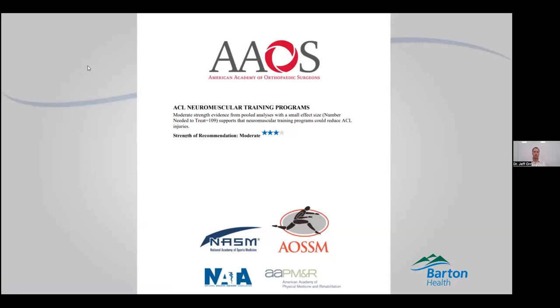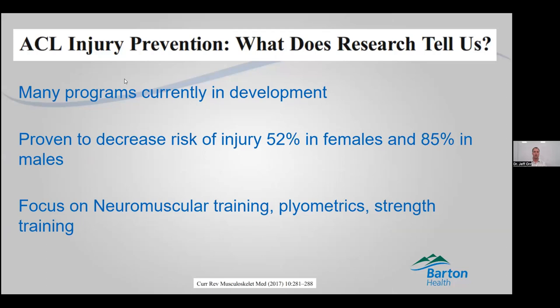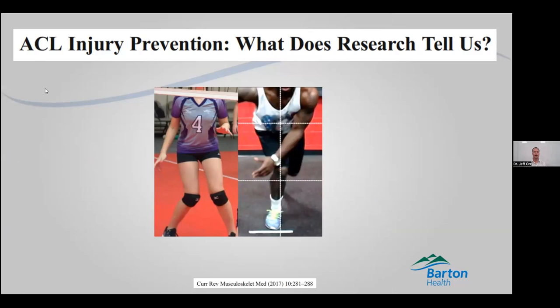Neuromuscular training program: keeping the legs strong, keeping your core strong, and staying in balance and having good control is important. Currently there are many programs in development — this is a very big thing that a lot of high schools, youth soccer, football, and skiing programs are doing, which certainly decreases risk in young athletes. For example, learning how when you land, you want to keep your knees apart and keep them straight. If your knee buckles to the inside, it's going to start to twist and put stress on that ACL, creating risk of injury.